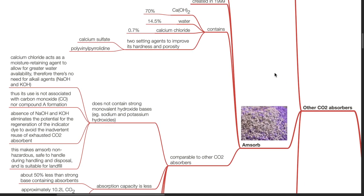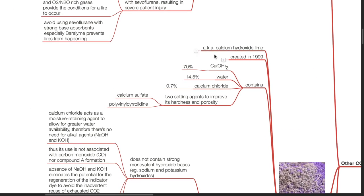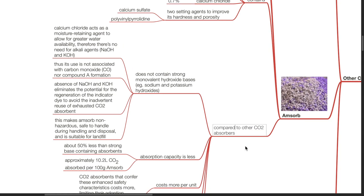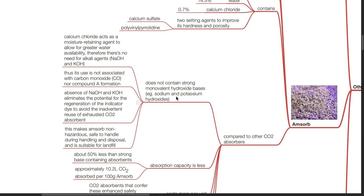Amsorb, also known as calcium hydroxide lime, was created in 1999. It contains calcium hydroxide 70%, water 14.5%, calcium chloride 0.7%, and two setting agents — calcium sulfate and polyvinylpyrrolidone — to improve hardness and porosity. Compared to other CO2 absorbers, Amsorb does not contain strong monovalent hydroxide bases such as sodium and potassium hydroxide. Calcium chloride acts as a moisture-retaining agent to allow for greater water availability, therefore there is no need for alkali agents.